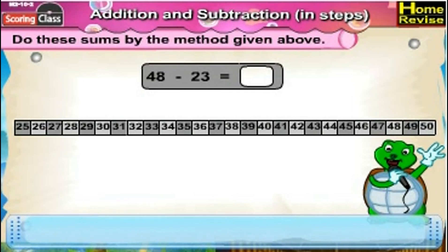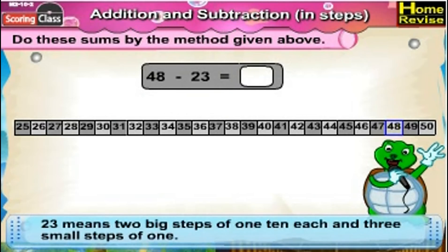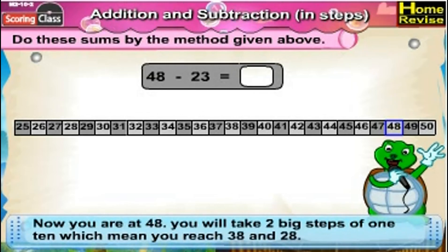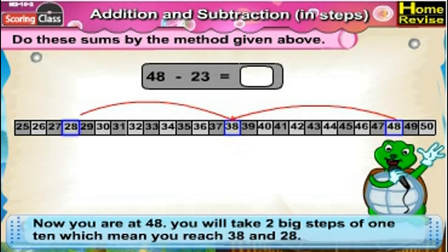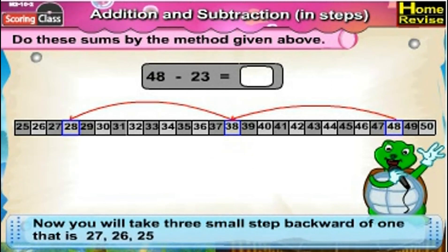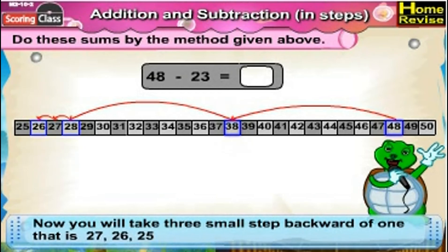The last sum is the sixth sum: 48 minus 23. Now, 23 means two big steps of 10 and three small steps of 1. You are at 48. You will take two big steps of 10, which means you'll reach 38 and then 28. Now you will take three small steps backward of 1 — that is 27, then 26, then 25. So 48 minus 23 is 25.